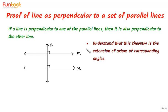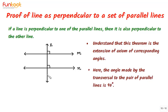By doing this proof, what we aim to learn is that this proof is an extension of the corresponding angle axiom, where the angle made by the transversal with the pair of parallel lines is 90 degrees.